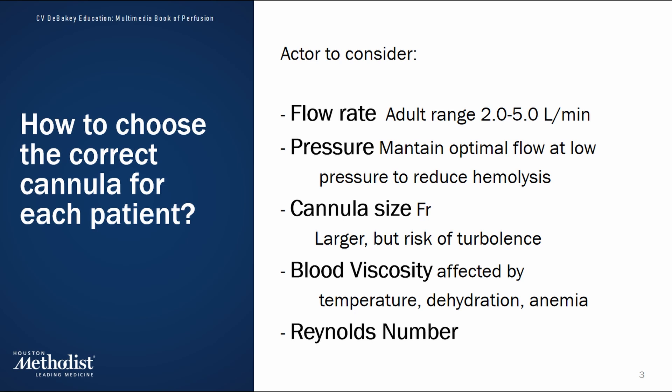First, there is the flow rate. For adults, the typical flow rate ranges from 2 to 5 liters per minute or more, depending on the patient's size and the type of procedure being performed. Next is the pressure. High pressures across the cannula can damage red blood cells or, even worse, can cause damage to the intimal layer of the aorta, provoking dissection.